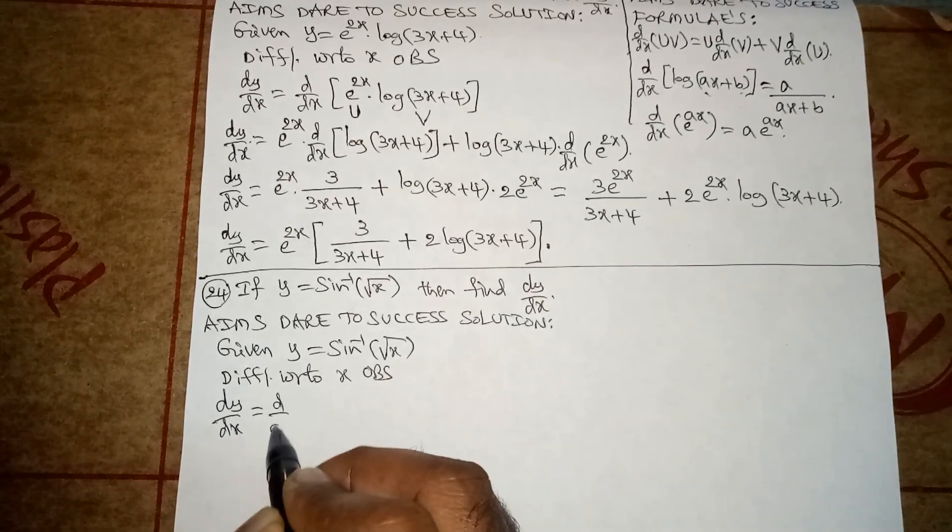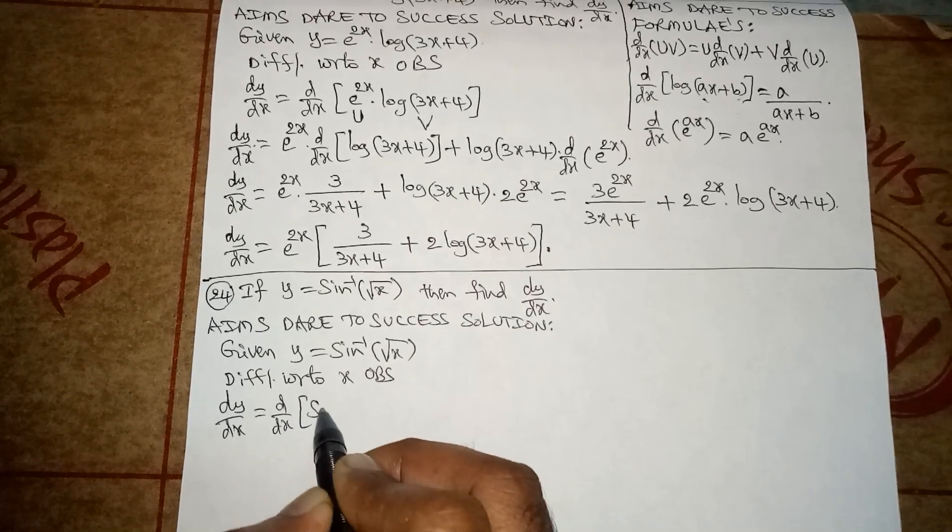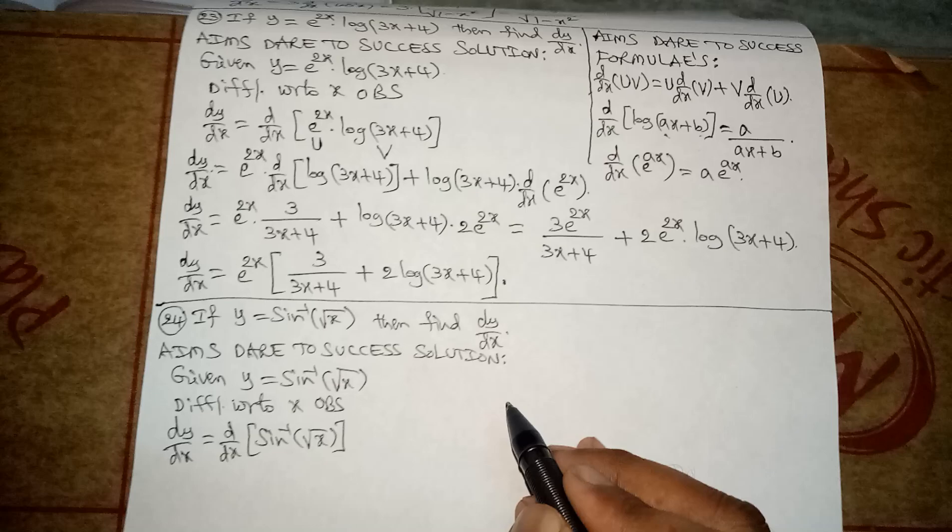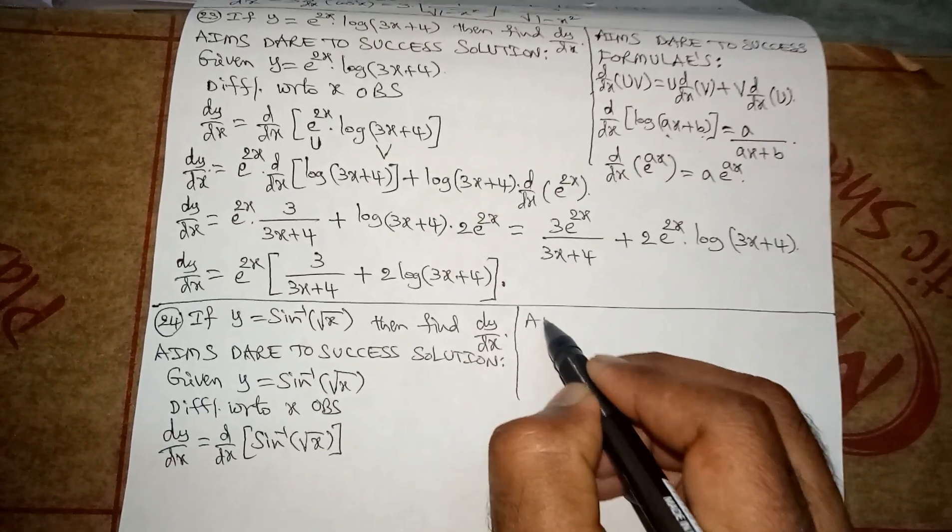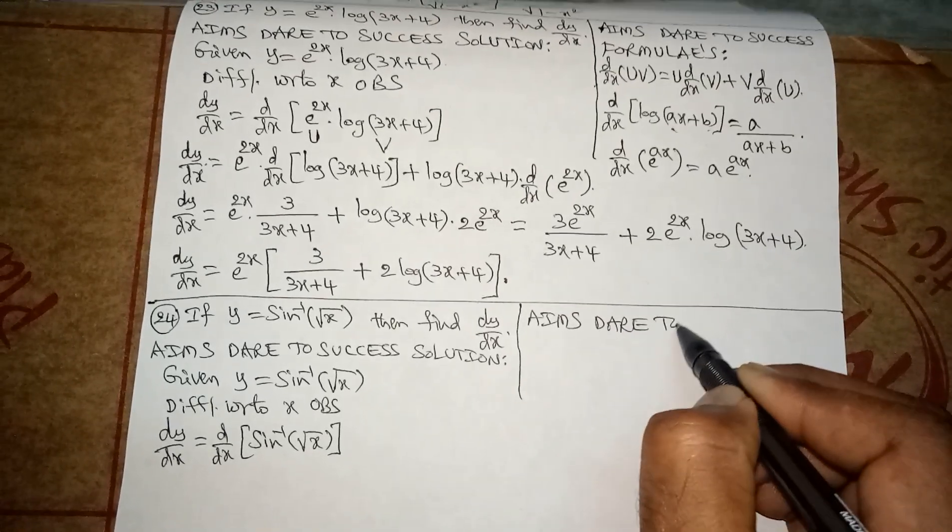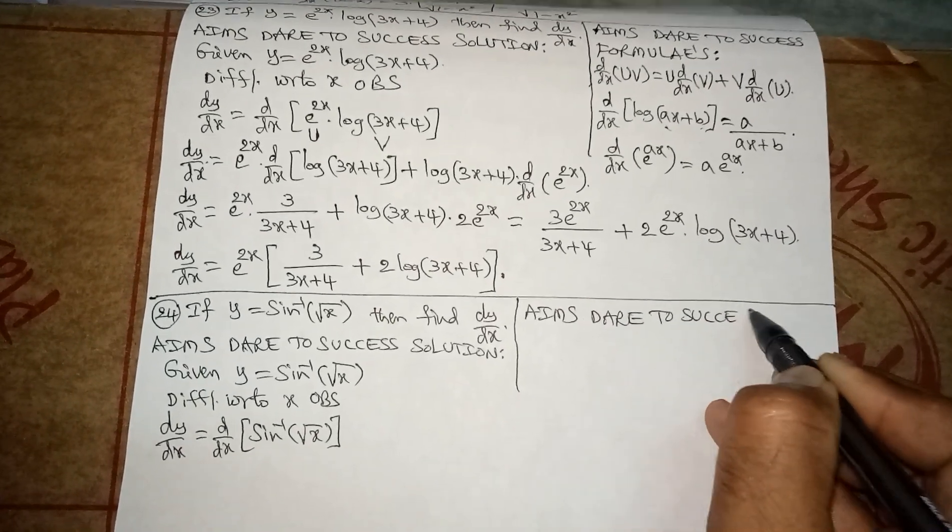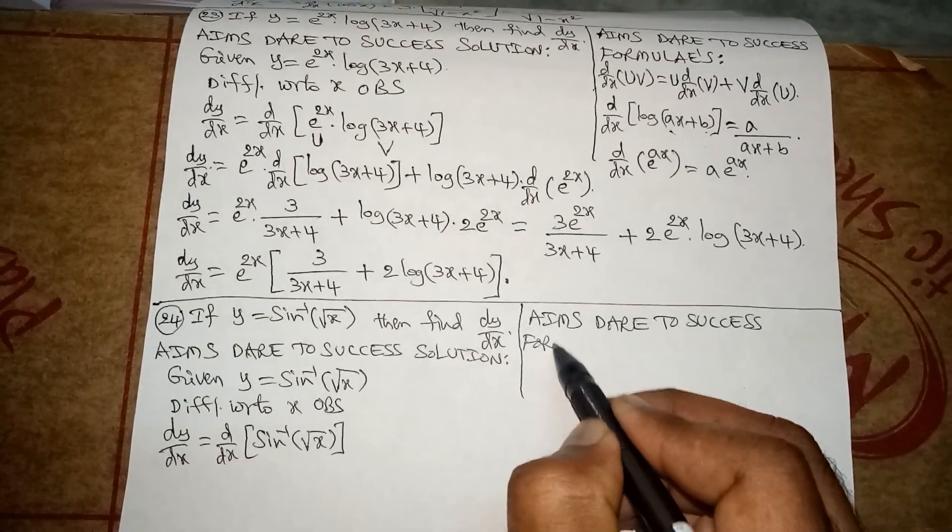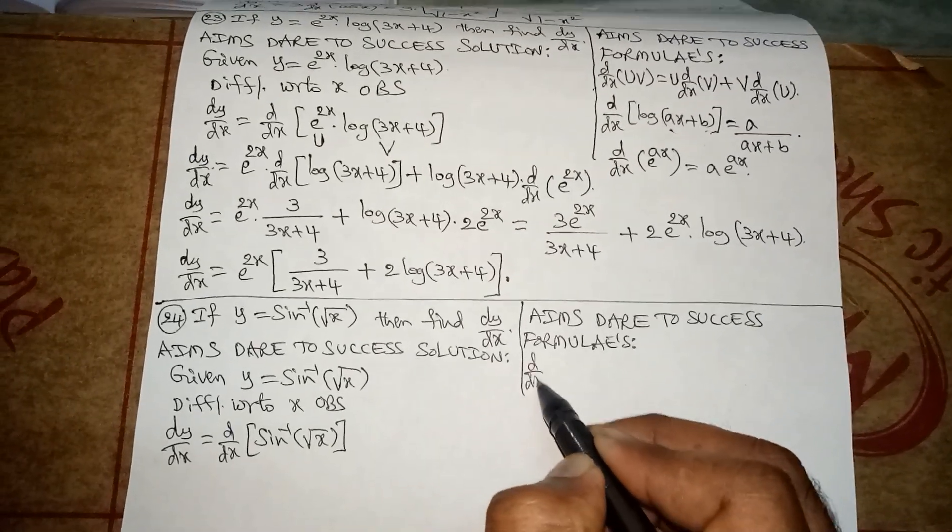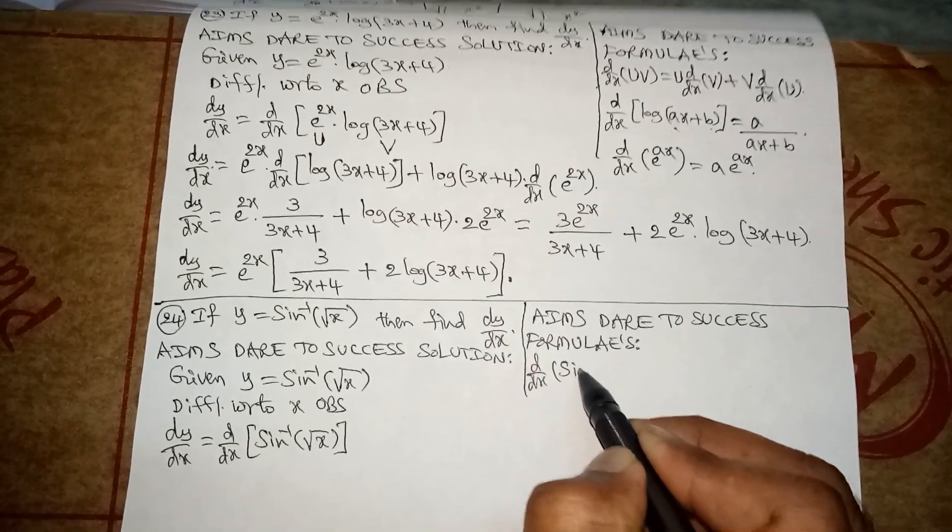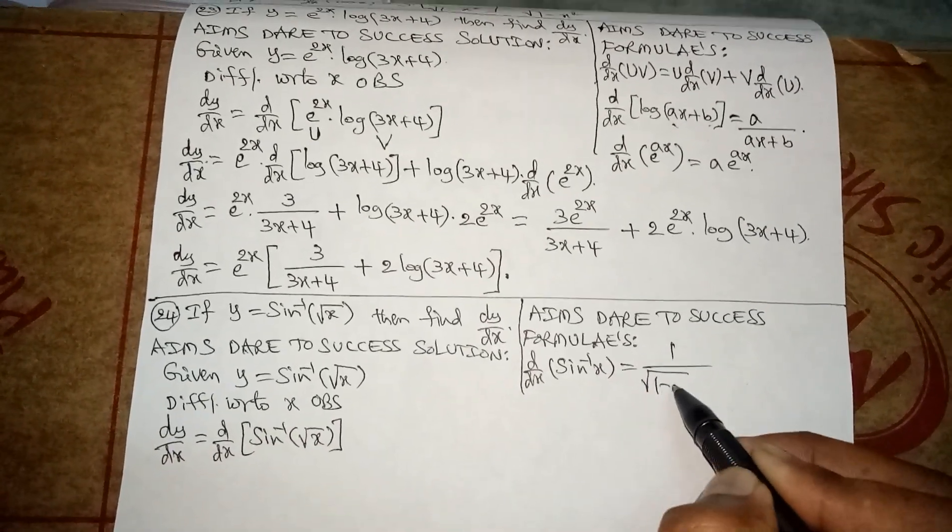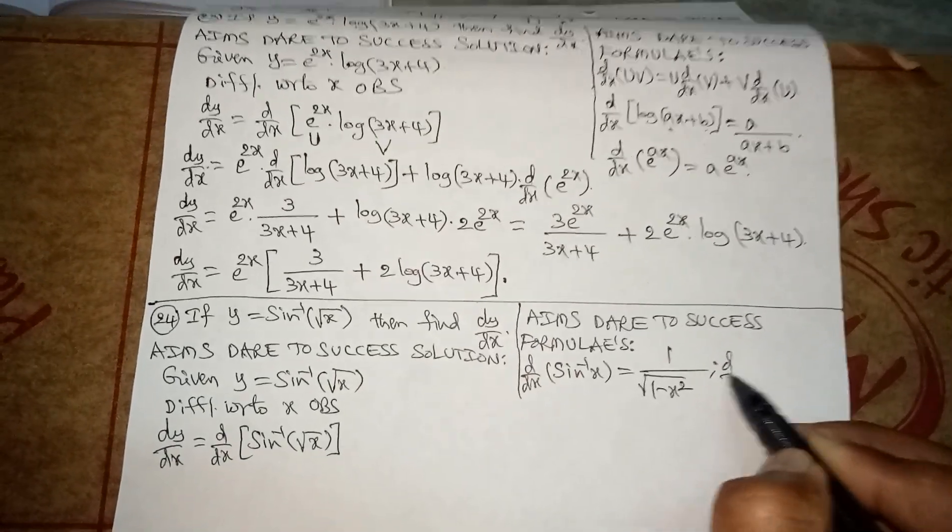Here I want to write the formulas. AIMS Dare to Success formulas: d by dx of sine inverse x is 1 by root 1 minus x square.